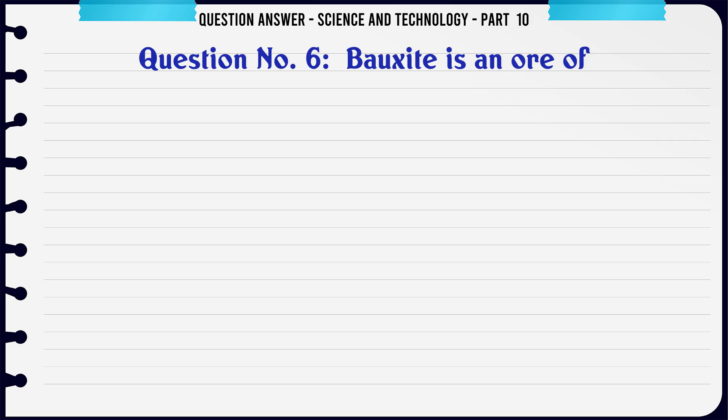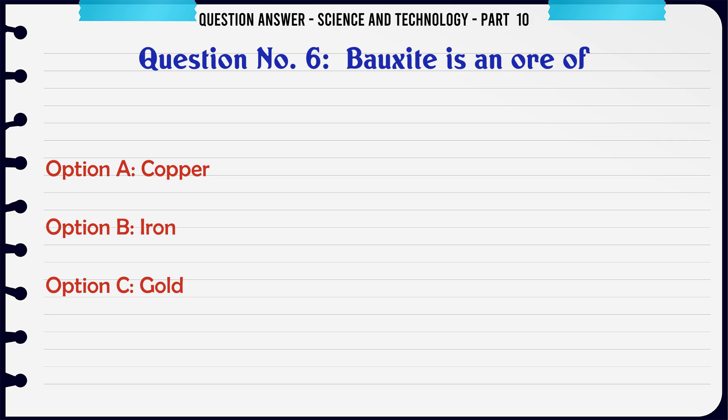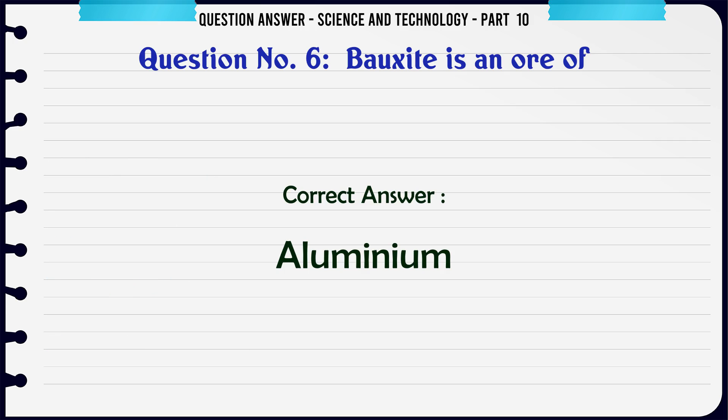Bauxite is an ore of. A. Copper. B. Iron. C. Gold. D. Aluminium. The correct answer is Aluminium.